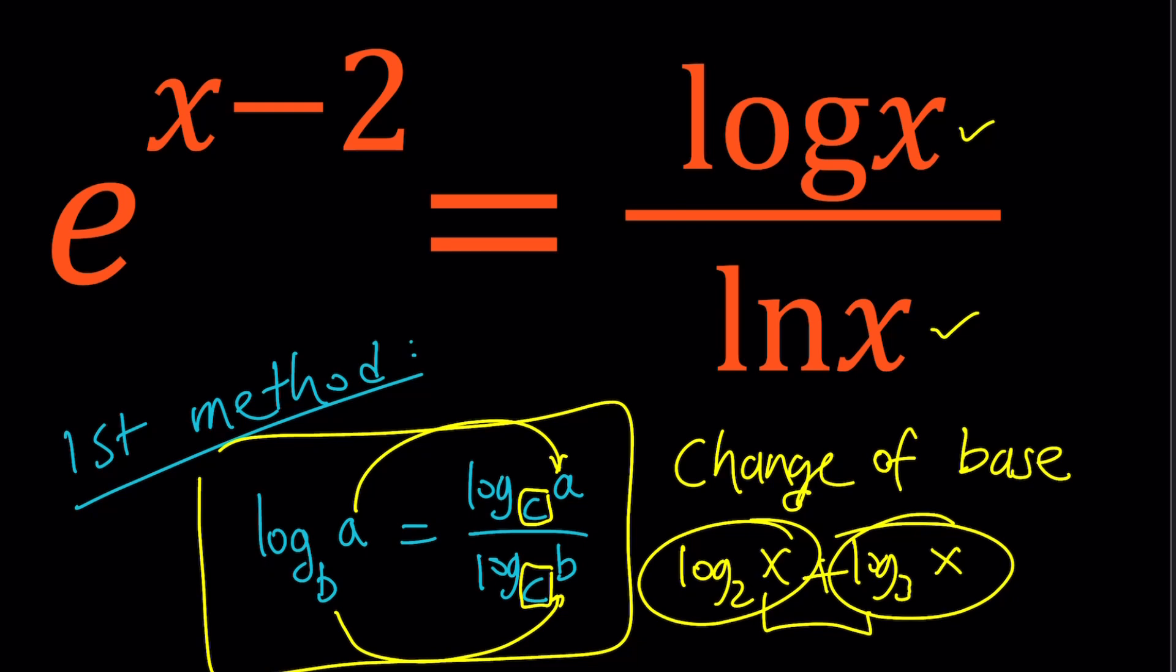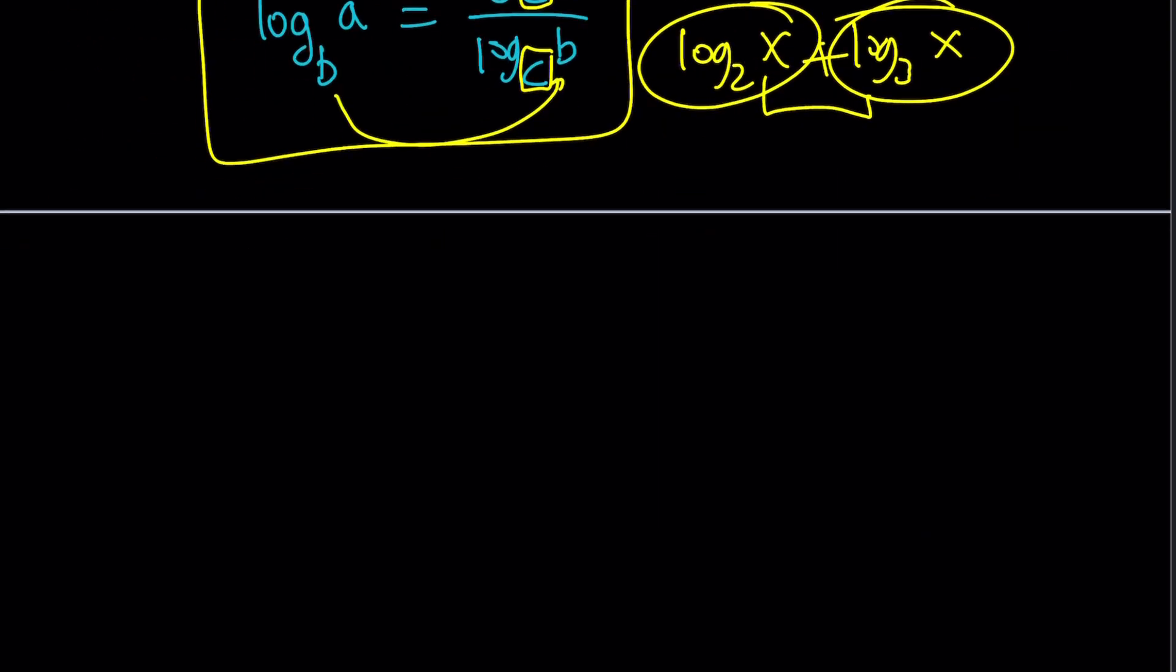In this case, we're going to use it in this direction. So, I'm going to go ahead and take log x and change it into ln. So, let's do it. e to the x minus 2 equals log x over ln x. Now, log x is base 10. I'm going to write it as ln, which is e, base e. I'm not writing it, but it just means ln. If you want, I can write it. Let's just write it to make it more clear. Log base e, log base e.